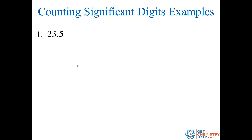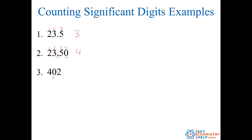Let's go through a few quick examples. How about 23.5? They're all non-zero digits so they're all significant: one, two, three — three significant digits. How about 23.50? Rule four says trailing zeros are significant if there's a decimal, and there is a decimal, so this is one, two, three, four — four significant figures. How about 402? This zero has been sandwiched in the middle of two non-zero numbers, so all three are significant: three sig figs.